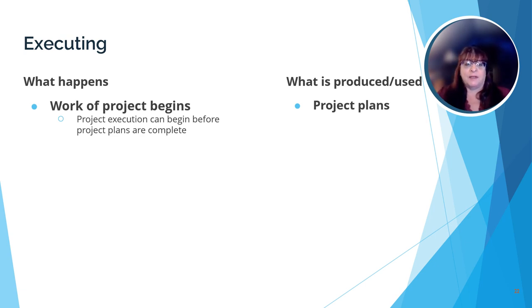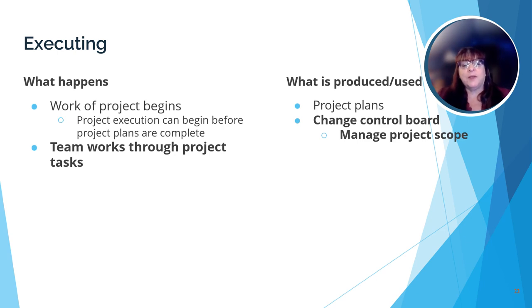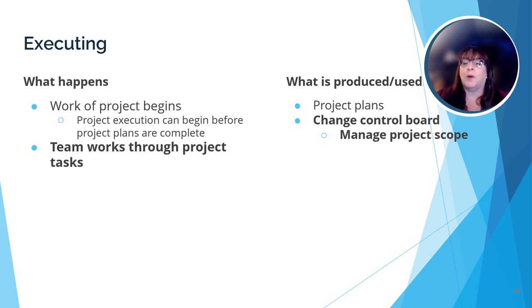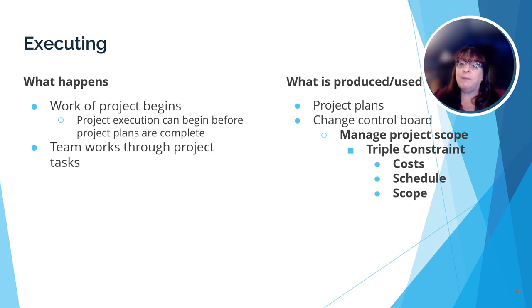Here we are in the execution phase of the project — where the project tasks actually begin. Just remember, the work of a project may begin before the project plans have been completed; at this point, they may still be a work in progress. The execution phase is pretty self-explanatory: the project tasks are implemented according to the project plans. As we've discussed when reviewing the triple constraint theory, it's up to the project manager and their team to keep track of the scope, the budget, and the schedule of the project to make sure those areas don't deviate completely from the planning documents. The project manager may create a change control board where they can keep track of any requested changes to the project plan, noting how each change in scope will impact the budget or project schedule. If a change is going to make big changes to either of those, the project manager may need to go back to the project sponsor and request extra funds or more time.